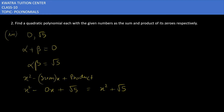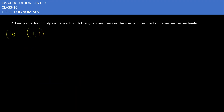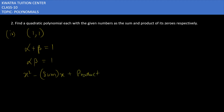Moving to the fourth one: the sum of zeros alpha plus beta is 1 and alpha dot beta is 1. Using the formula x squared minus (sum)x plus product, we get x squared minus 1 times x plus 1. So the polynomial is x squared minus x plus 1.